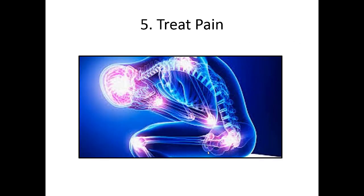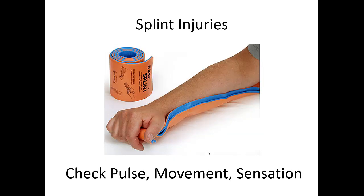If you have a patient that's relatively stable and all other priorities are taken care of, don't be afraid to treat their pain. Trauma hurts and we want to be kind and compassionate. If you have time, address any pain needs the patient might have. That includes splinting — splints make broken bones feel better by decreasing movement and stress on the fracture. Before and after placing any splint, make sure you're checking pulse, movement, and sensation.